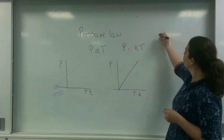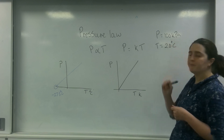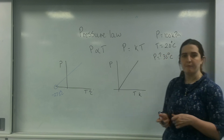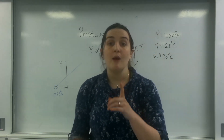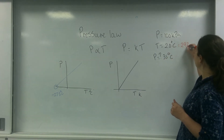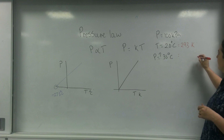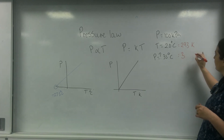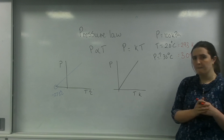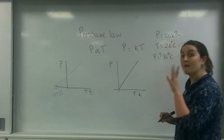So I may have a pressure of 100 kilopascals at a temperature of 20 degrees C, and I want to know my new pressure at 35 degrees C. The first thing you have to do is convert all of your temperatures into Kelvin. So 20 degrees C is 293 Kelvin, and 35 degrees C is 35 plus 273, which is 308 Kelvin.